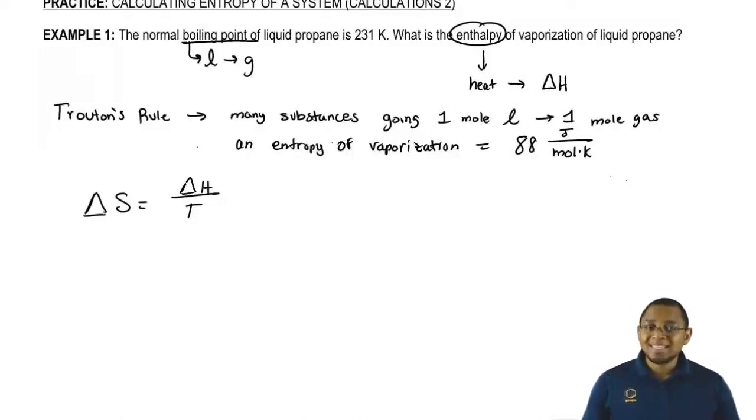Now we know that the delta S is going to be 88 because we're talking about normal boiling point. Normal means we're dealing with one mole of a liquid. We're talking about its transition from the liquid state to the gaseous state. Again, Troughton's Rule says, as we make the transition from one mole of liquid to one mole of gas, the entropy of vaporization of that substance is about 88 joules over moles times K.